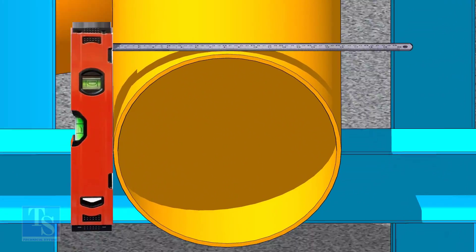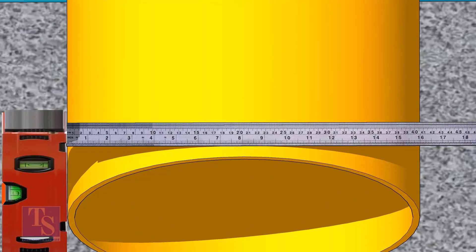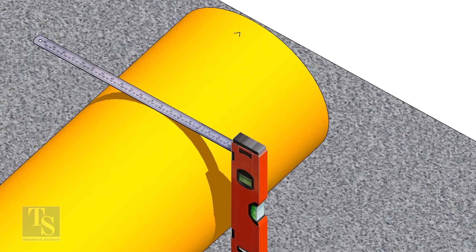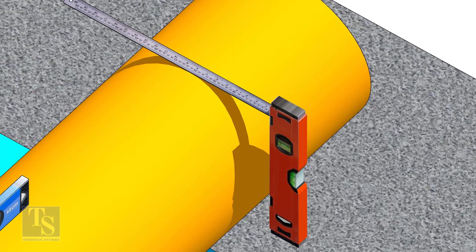Mark half OD at 300mm apart. This pipe OD is 406mm, so mark 203mm from the vertical level bottle, on the top of the pipe, and draw a line connecting these marks.